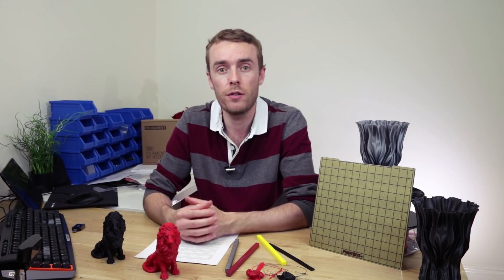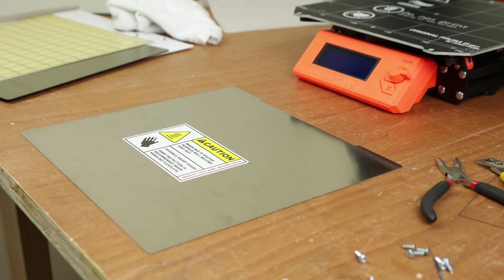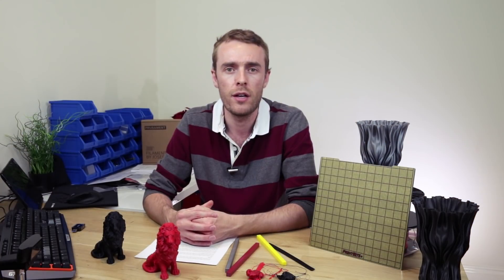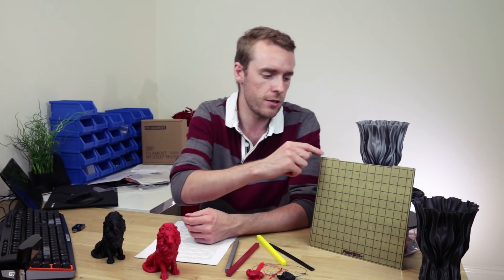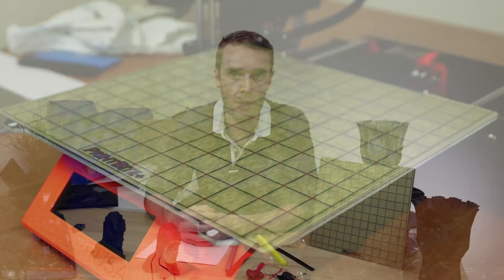So I got in touch with BuildTac and they kindly provided one of their flex plate surfaces, which is basically just spring steel, the same as the Mark III, and that fits perfectly as you can see. It even has the little notches for the alignment on the Mark 52 bed on the Prusa Mark III.